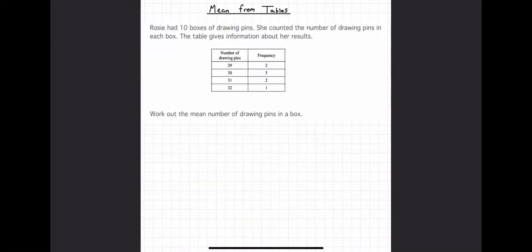Looking at mean from tables: Rosie has 10 boxes of drawing pins. She counted the number of drawing pins in each box. The table gives information about her results — work out the mean number of drawing pins in a box. To find the mean, we add everything up and divide by how many there are.